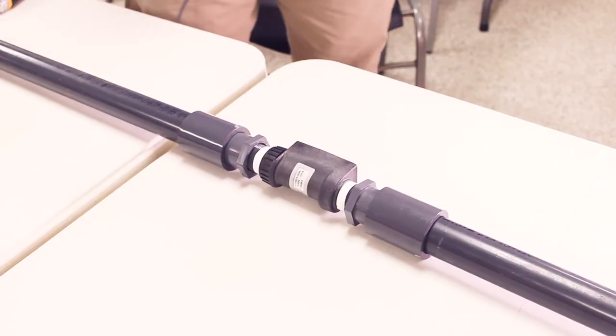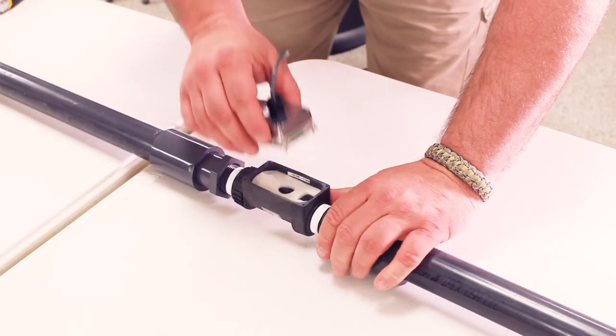Once you have the mechanical portion of the recording meter installed on the pipes, you can install the electronic head.